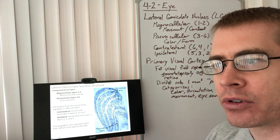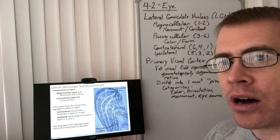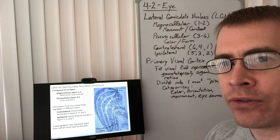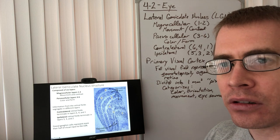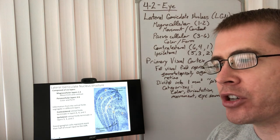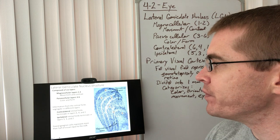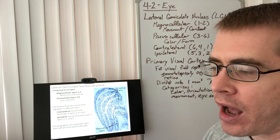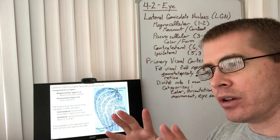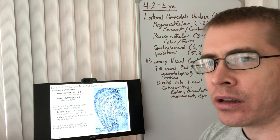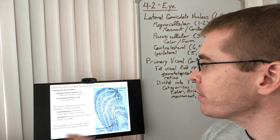The magnocellular layers are responsible for processing information about movement and contrast. The other four layers, three through six, are the parvocellular layers, and they process information about color and they have a high degree of visual acuity, so they're separating forms within the visual fields.